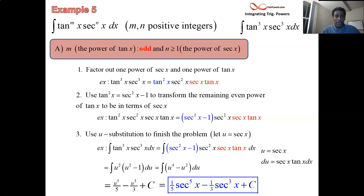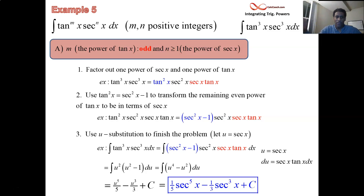That's how you attack the problem when the power of tangent is odd and there are secant powers available for you to factor out as well.